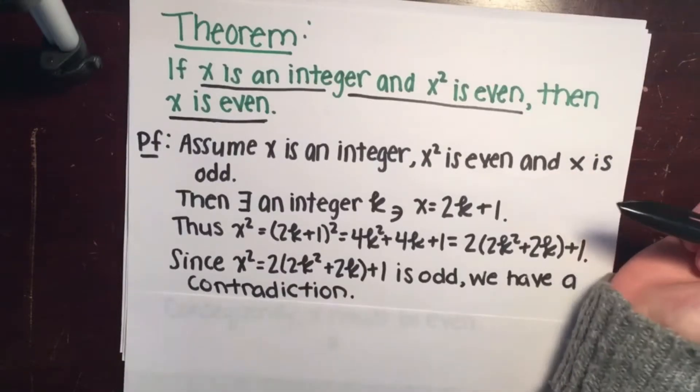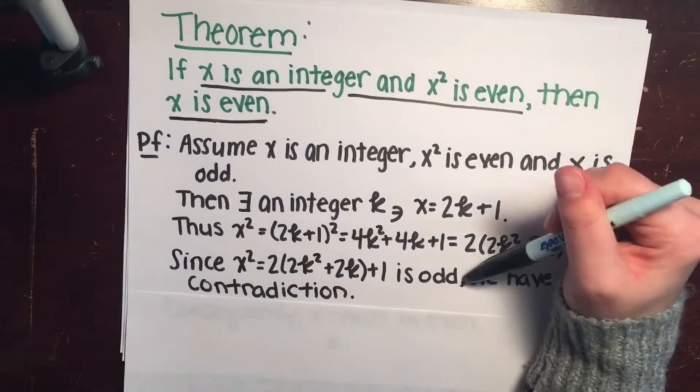So what we did is we kind of like manipulated the theorem, right? And we tried to prove it true for any case or for at least the case where x is odd. And we didn't get that. We got that x squared is odd, not even.